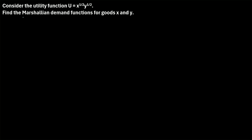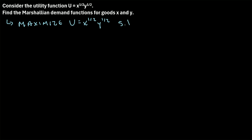When we talk about Marshallian demand functions, our goal is to maximize our utility subject to our budget constraint. So let's write that down. We want to maximize utility, which is given by u equals x to the one-half times y to the one-half, subject to the budget constraint, which is m, the income, equal to the price of x times the quantity of x plus the price of y times the quantity of y.